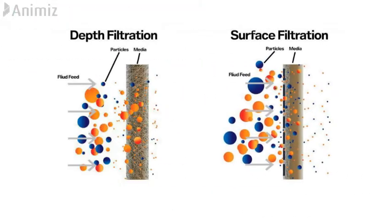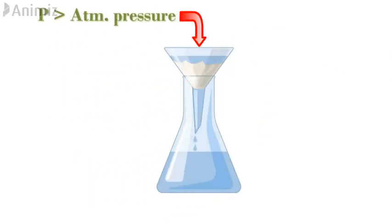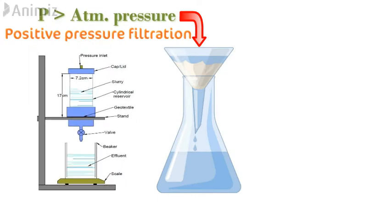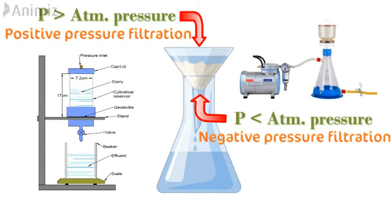Here we can see a diagrammatic representation of depth filtration and surface filtration. Now, on the basis of pressure applied during the filtration process, filtration can be of two types. If the external pressure applied is on the top surface of the filtration media and it is more than atmospheric pressure, then it is called positive pressure filtration. If the pressure is reduced from below the filtration media and it is less than atmospheric pressure, it is called negative pressure filtration. Usually an external pressure is applied or reduced to increase the filtration rate and reduce the filtration time of the process.